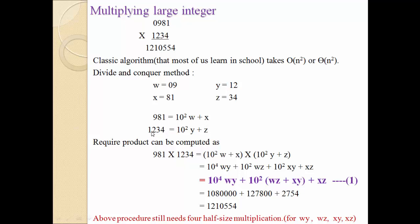Now performing multiplication 981 × 1234, we substitute to get (10² × w + x)(10² × y + z). Expanding this gives: 10⁴ × wy + 10² × wz + 10² × xy + xz.